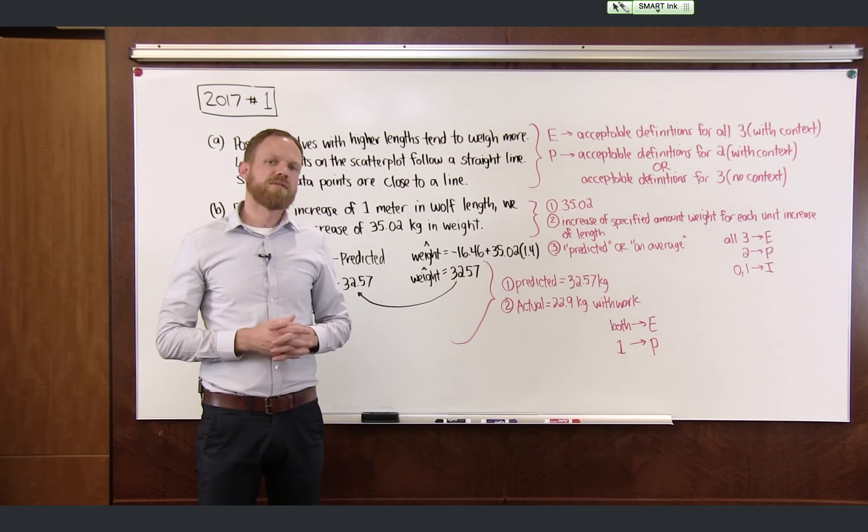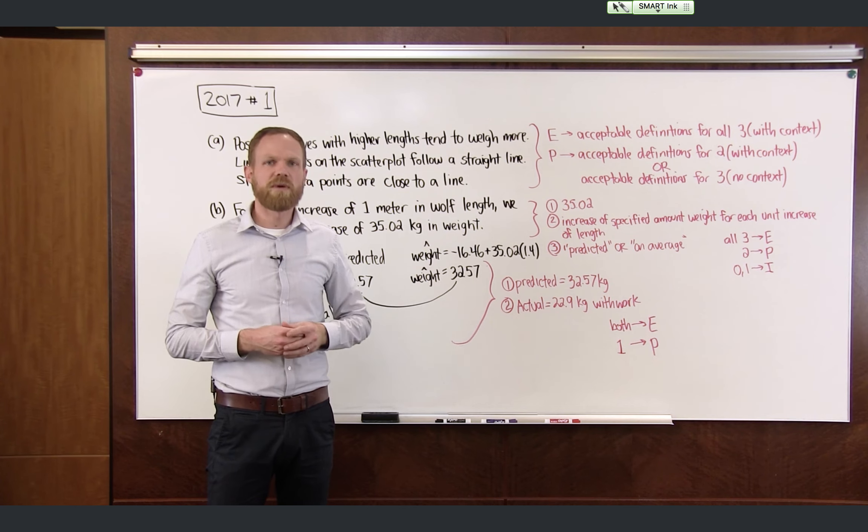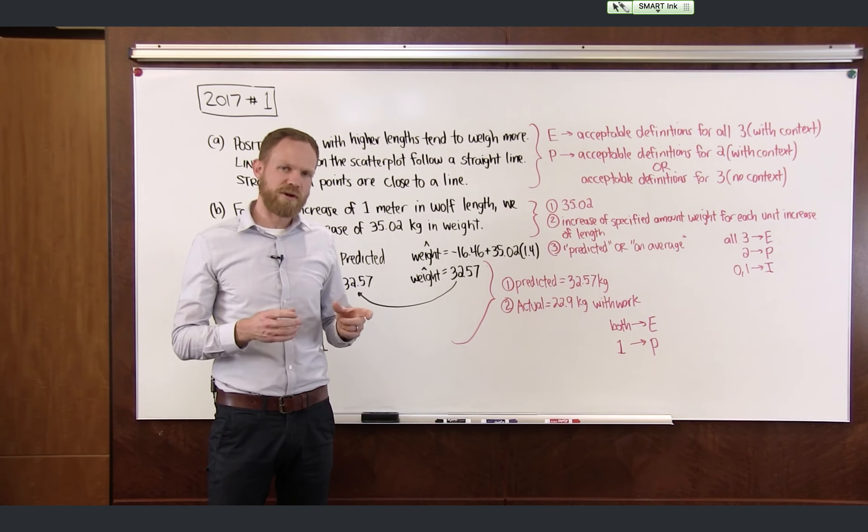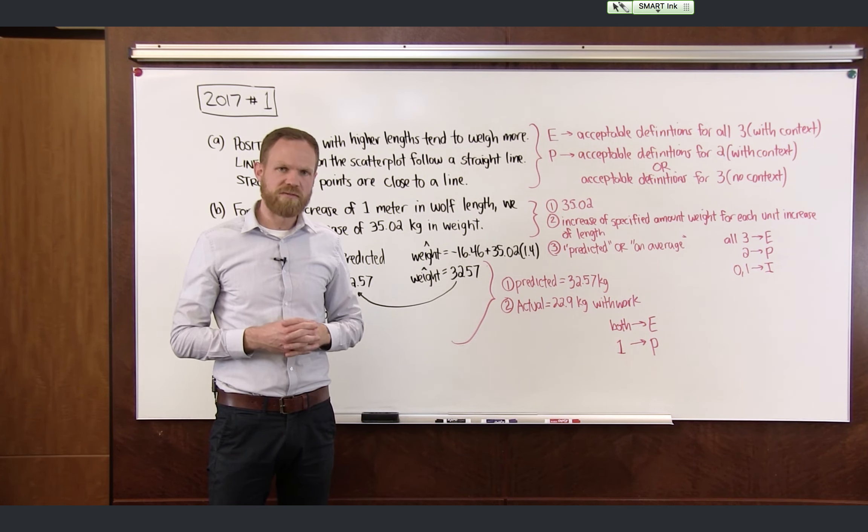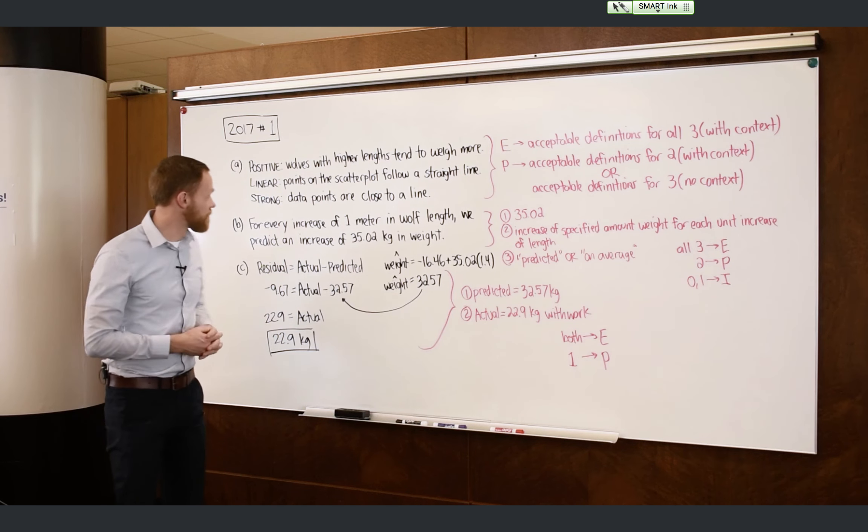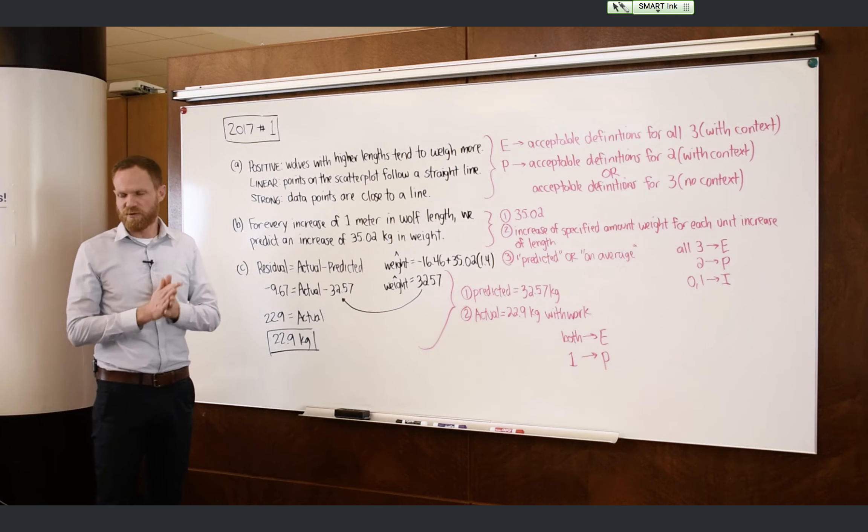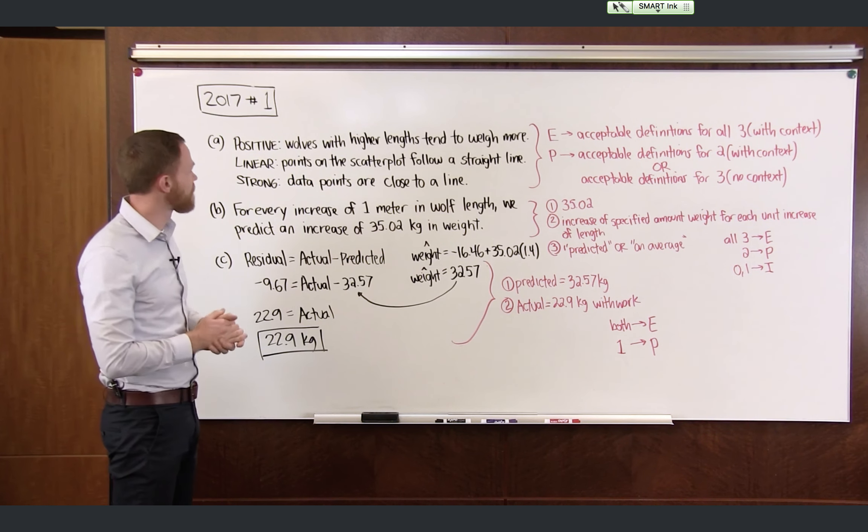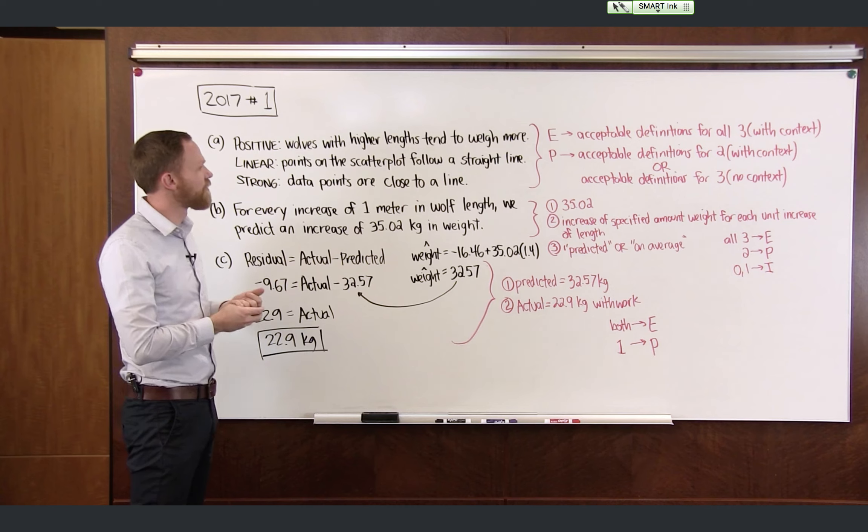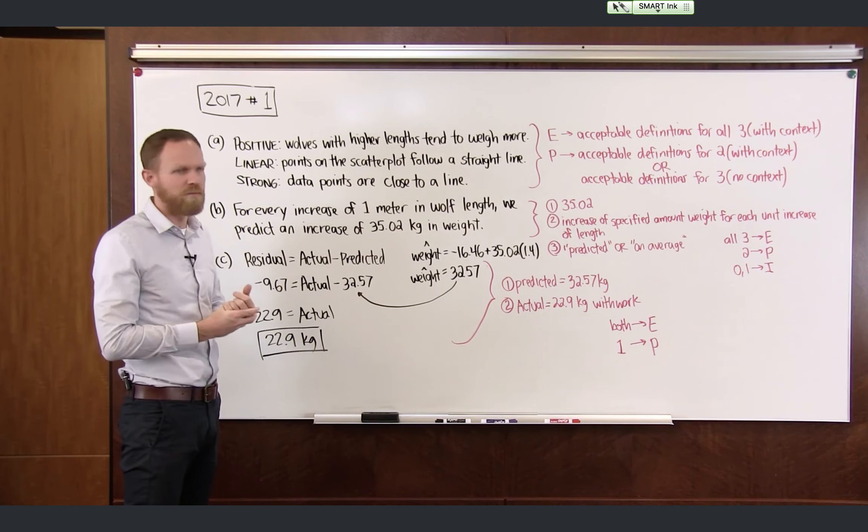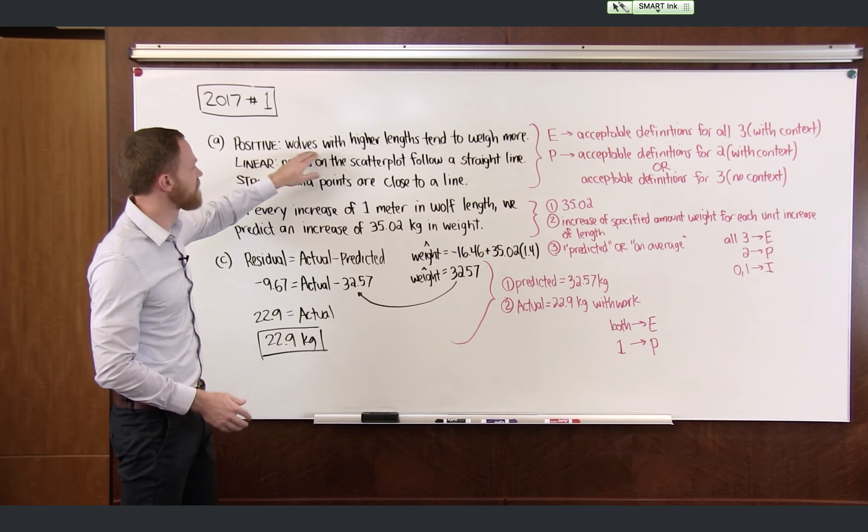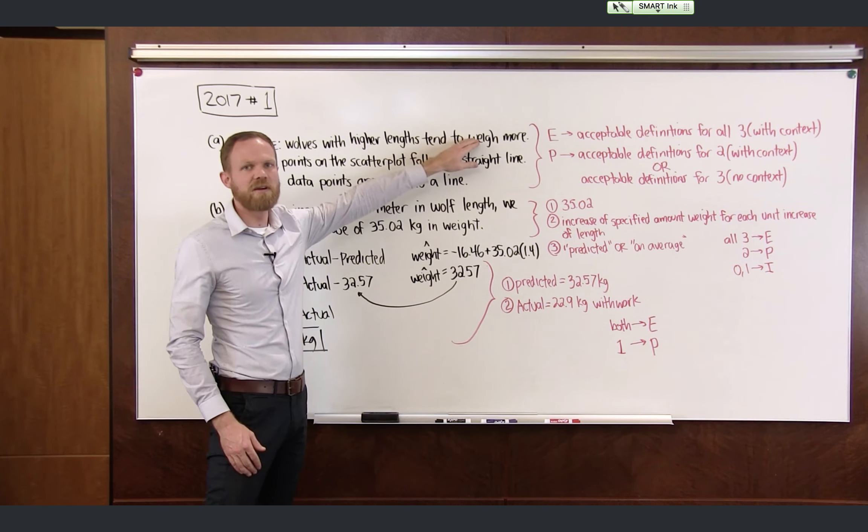So I'm going to take you first through a model solution. And then after we look at the model solution, we'll take a look at the rubric and what was required in order to get full credit. So for our model solution, in Part A, we had to give good descriptions for three different big ideas. For positive, we've stated here that wolves with higher lengths tend to weigh more. And you'll notice that I've taken care of the context right there in the first part.